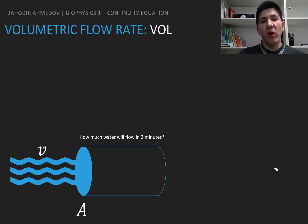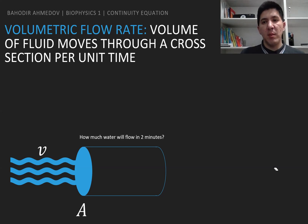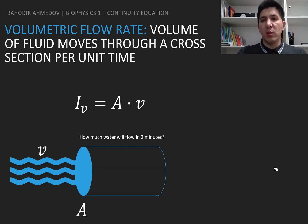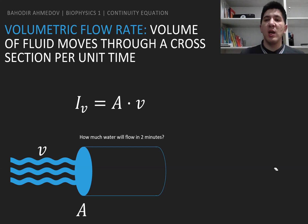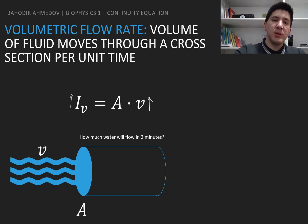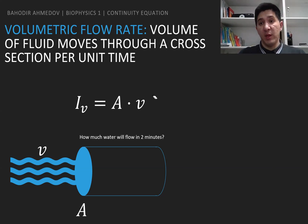We define something called the volumetric flow rate: the amount of water passing through the cross-section area per unit of time. We say this amount is proportional to both the velocity of the fluid and the cross-section area. So we define the volumetric flow rate as the cross-section area multiplied by the velocity: IV = A × v. This is one of the really important equations because it connects the cross-section area, the velocity, and the volumetric flow rate.